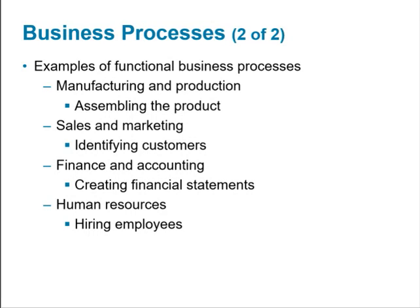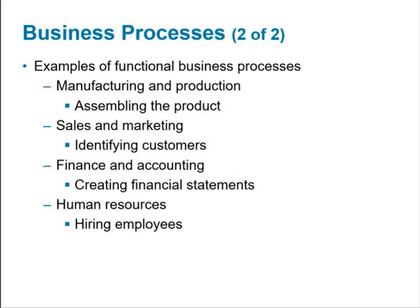Looking at the different functional areas that may exist — manufacturing, sales and marketing, finance, accounting, and human resources — a typical business process under manufacturing may be the assembling of a product. Under sales and marketing, a typical business process may be the identification of customers. In finance, the preparation of financial statements is also a business process. Similarly, the hiring of employees as part of the human resource function is another example.